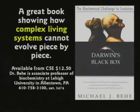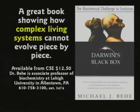This is the book he's referring to — Michael Behe's book, Darwin's Black Box — an excellent book showing how complex living systems cannot evolve piece by piece. There are too many interconnecting parts that depend on each other. He uses the illustration of a mousetrap with five basic parts. You have to have at least those five parts — remove any one of them, and it ceases to function.